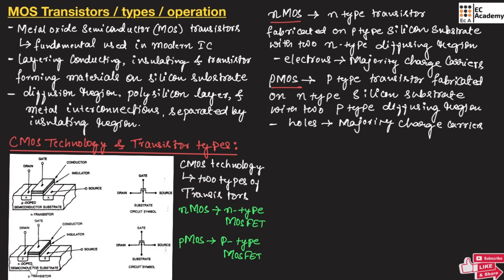From the structure itself, you can make out the difference. In NMOS, the substrate is P-type, and in PMOS the substrate is N-type. The diffusion region in NMOS is N-type, and the diffusion region in PMOS is P-type. You need to remember this difference.